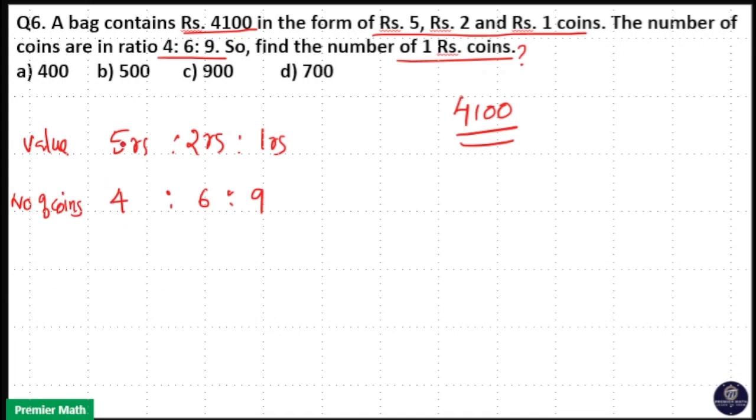That means value of 5 rupee coins is equal to 5 into 4, 20 rupees. 2 into 6, 12 rupees is 2 rupee coin value. And 1 into 9, 9 rupees is 1 rupee coin value. But the total value here is 4,100.